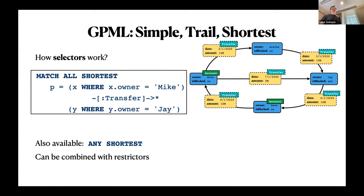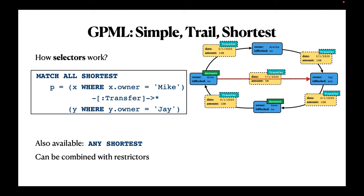Selectors filter out results while maintaining finiteness. For example, ALL SHORTEST finds the shortest paths between Mike and Jay. You can output all shortest or any shortest. Selectors can be combined with restrictors, but syntactically arbitrary combinations can lead to problems — that was in fact the subject of long back and forth between the formal semantics working group and WG3. Finally, syntactic restrictions were added so selectors can only appear at the top of the pattern.